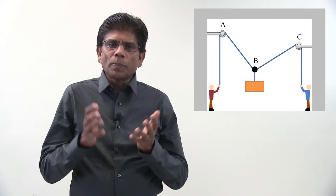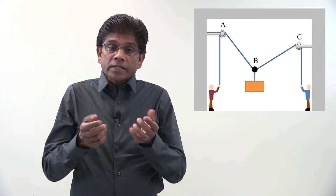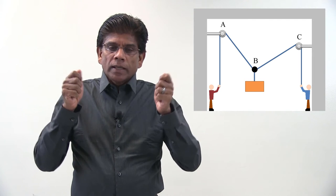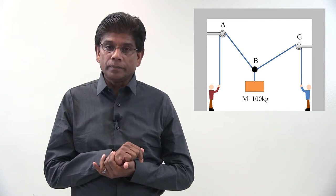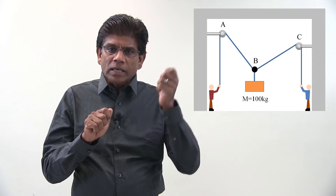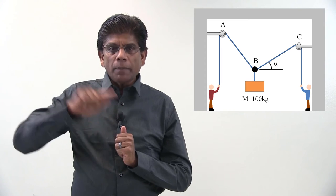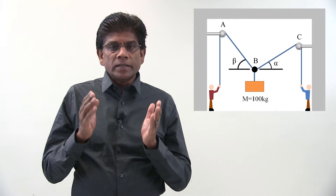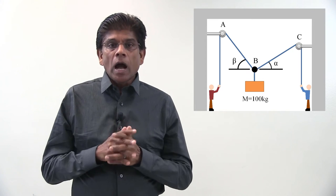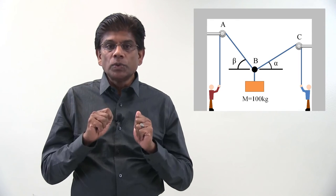Two workers are trying to place a heavy crate on the floor. The crate is supported by two ropes. Let's assume the mass of the crate is 100 kg. Rope BC makes an angle alpha with the horizontal. Rope AB makes an angle beta. At this instant, this crate is in static equilibrium. Our goal is to determine the forces experienced by these two cables.